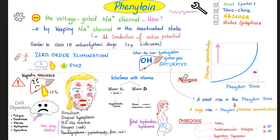Phenytoin mechanism of action: it inhibits the voltage-gated sodium channels by keeping the channels in the inactive state, which means sodium channels are toast — decreased conduction. Because sodium was the hero of depolarization, i.e. activation. Without the sodium channel, there is no activation, and we will inhibit the action potential.